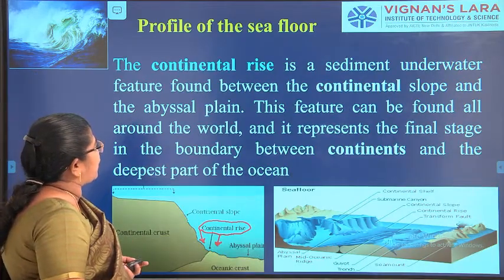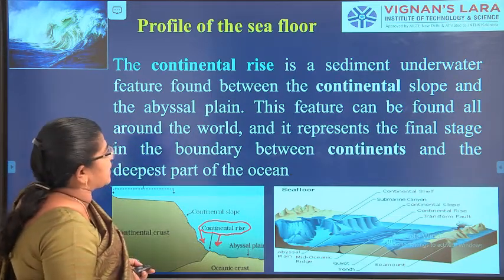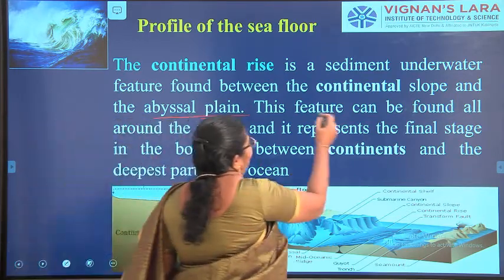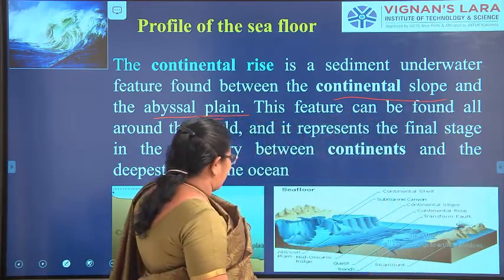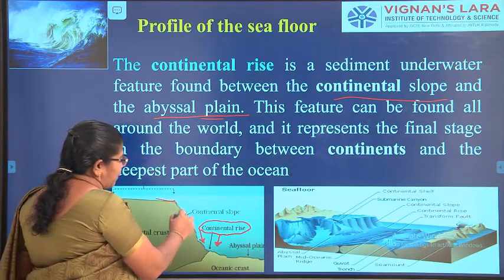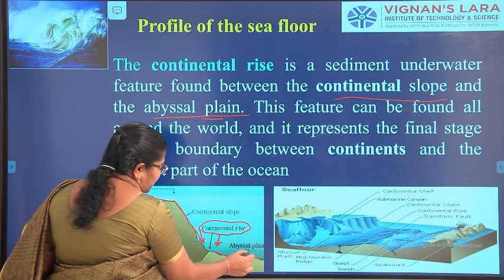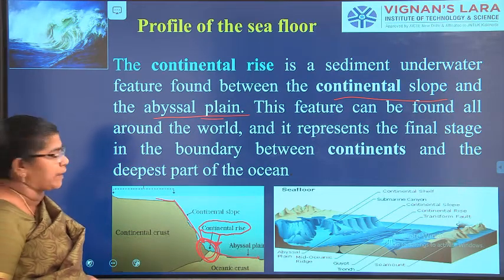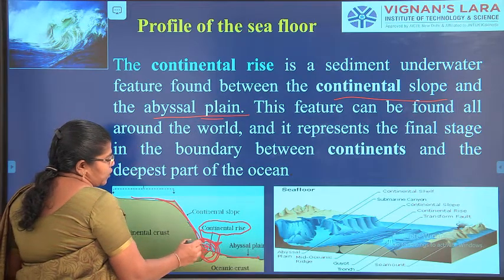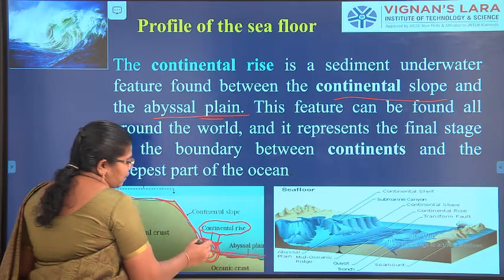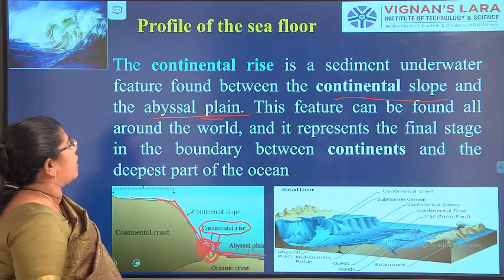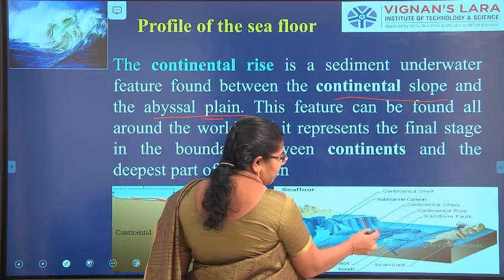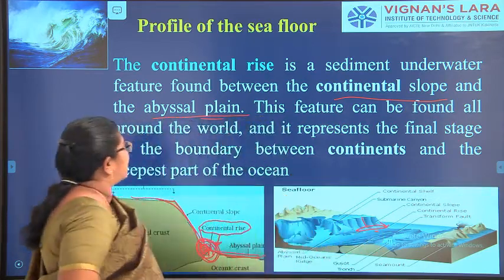The next feature is the continental rise. The continental rise is a sediment underwater feature found between the continental slope and the abyssal plain. The part where the continental slope joins the abyssal plain — we call it the continental rise. It is mainly formed because of the movement of sediment due to water currents.